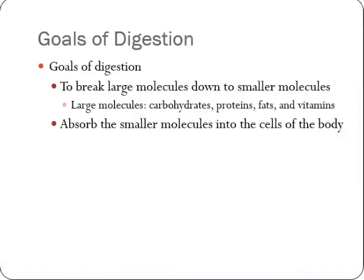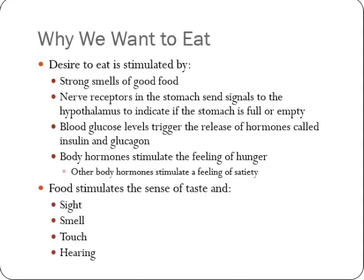Chapter three: are we really what we eat? First, digestion — which means breaking down large molecules into small molecules. When you eat a piece of bread, your body breaks down the starch molecules into simple sugar molecules that can be used in the body. Same with protein: you eat complex proteins but they're broken down into simple amino acids. The strong smell of good food stimulates our appetite. Nerve receptors in the stomach signal to the hypothalamus — the part of the brain stem that regulates our desires. Blood glucose levels trigger hormones called insulin and glucagon, which tell the body whether it needs more or less sugar, sending signals to your brain accordingly.